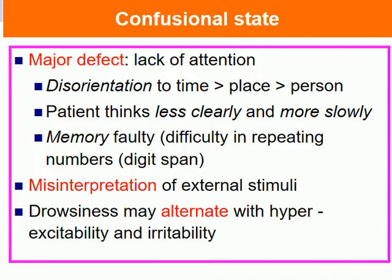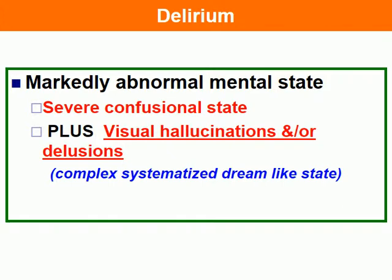Confusional state: the major defect is lack of attention, disorientation in time, place and person. The patient thinks less clearly and more slowly, memory is faulty, and there is misinterpretation of external stimuli. Drowsiness may be present. Delirium is marked by abnormal mental states: a confusional state plus hallucinations or delirious features.